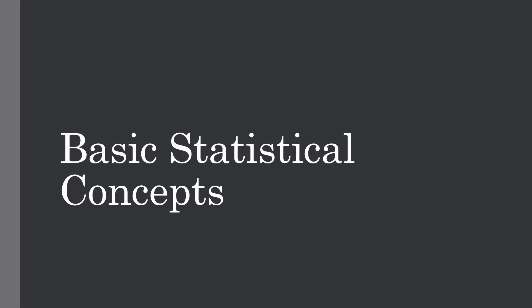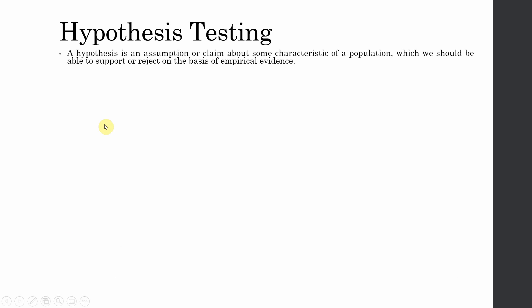In this session we are going to talk about basic statistical concepts. A hypothesis is an assumption, an educated guess, or a claim about some characteristic of a population, which we should be able to accept or reject based on some empirical evidence — based on the data that we collect.